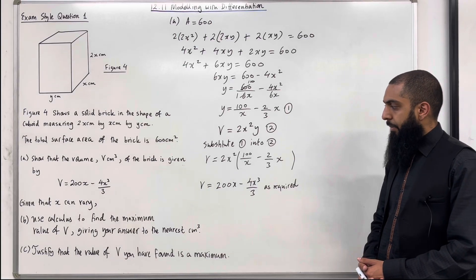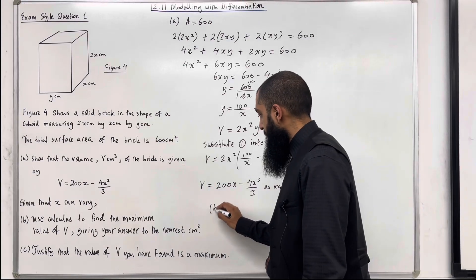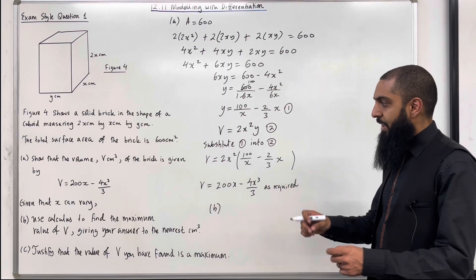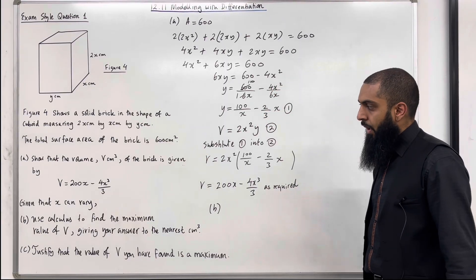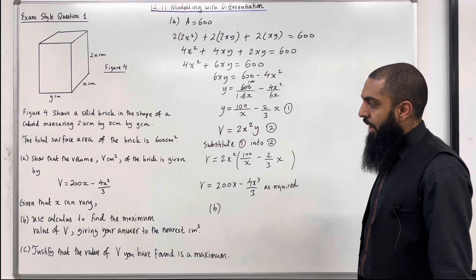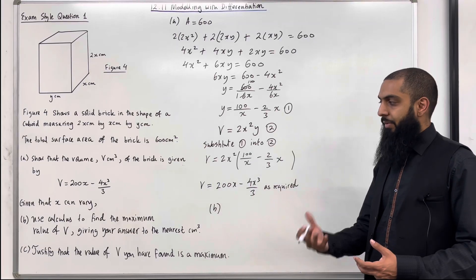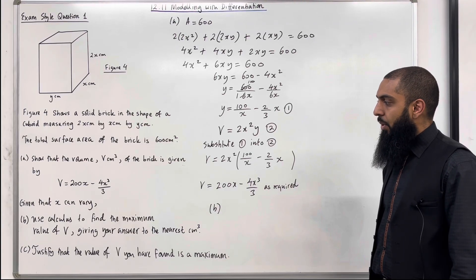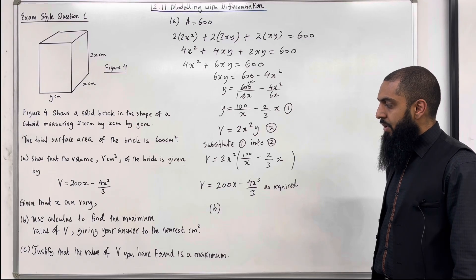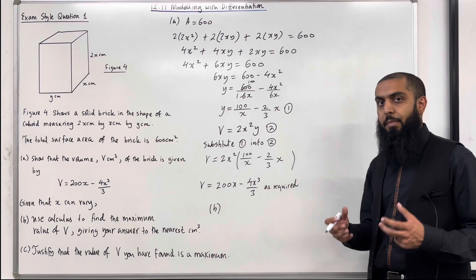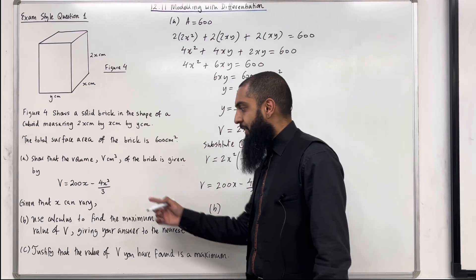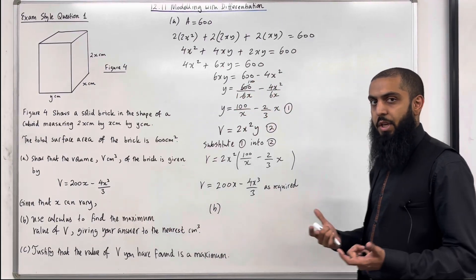Let's move on to Part B. Given that x can vary — meaning x can change — use calculus, so differentiation, to find the maximum value of v, giving your answer to the nearest centimetre cubed. This is an optimisation problem. We're trying to work out a maximum value, so we have to use differentiation here.